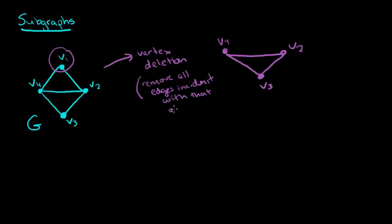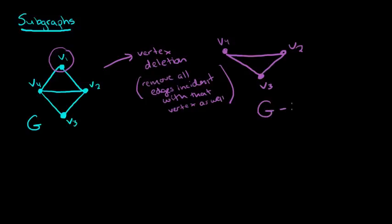So when you do vertex deletion, you also have to remove all edges associated or incident with that vertex. That's important to keep in mind. And now this is the new graph, and we have a special notation for that: we write G minus V1, because we've literally removed the vertex V1.